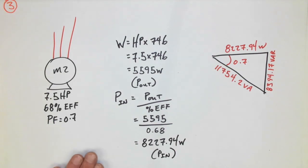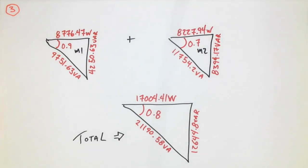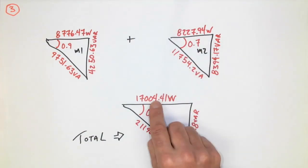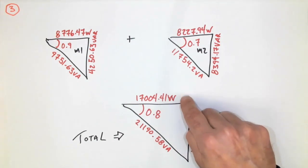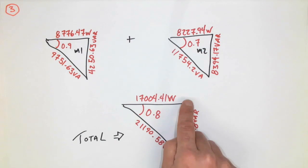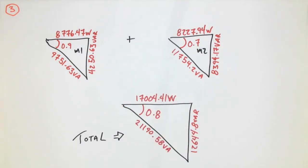Finally, the last step is to take these two power triangles and add the vertical and horizontal components together. I've added the two watt input values to get just over 17,000 watts, and the VAR values add to 12,644. Using the horizontal and vertical with Pythagoras, I get the total VA. To calculate the power factor, I take the horizontal divided by the hypotenuse, which gives me 0.8.